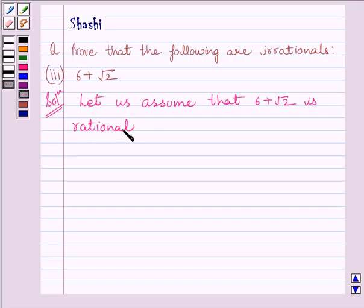Now put 6 plus root 2 equal to A upon B, where A and B are coprime such that B is not equal to 0.